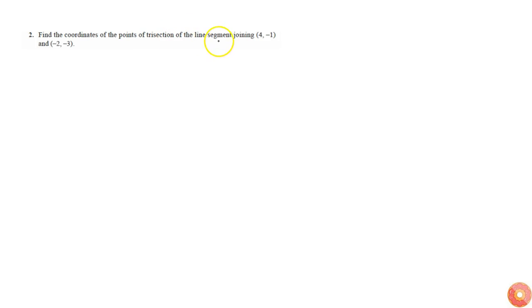In this question we are asked to find the points of trisection of the line segment joining (4, -1) and (-2, -3).